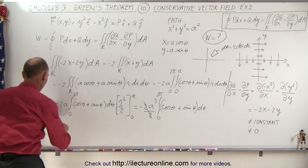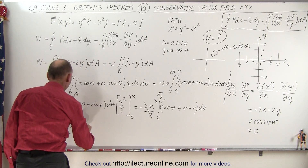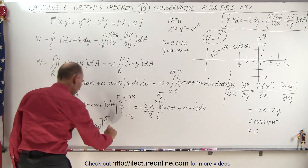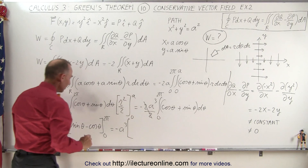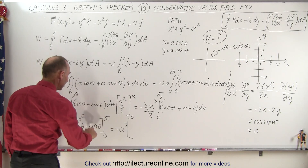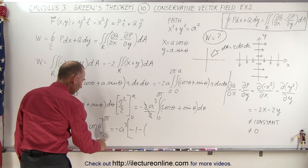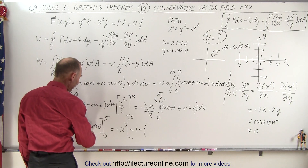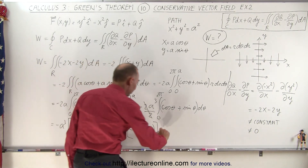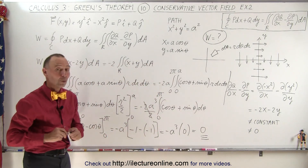Integrating, cosθ becomes sinθ and sinθ becomes minus cosθ, evaluated from 0 to 2π. The sine terms are always zero at 0 and 2π. For the cosine terms: minus cos(2π) is minus 1, and minus cos(0) is also minus 1, giving minus 1 minus (minus 1) = minus 1 + 1 = 0. So this is minus a³ times 0, which equals 0.